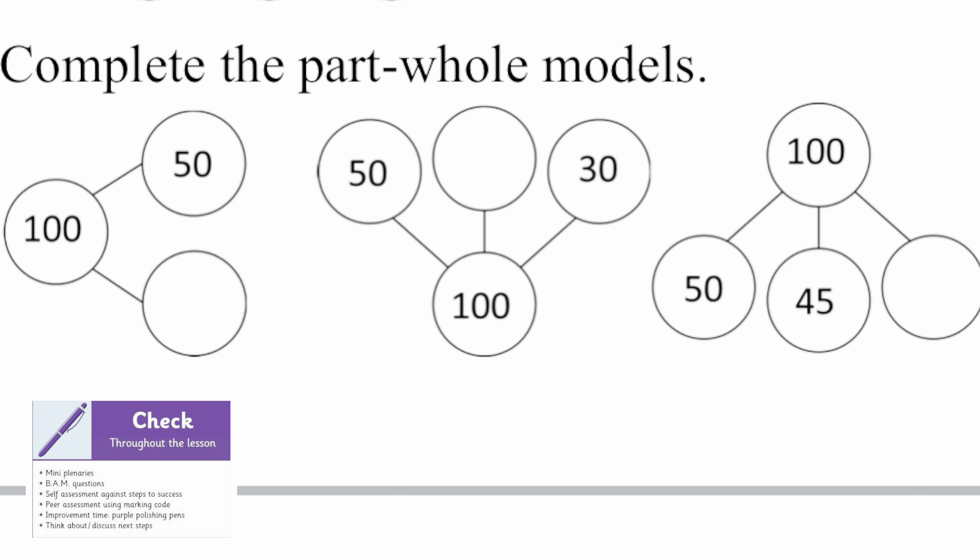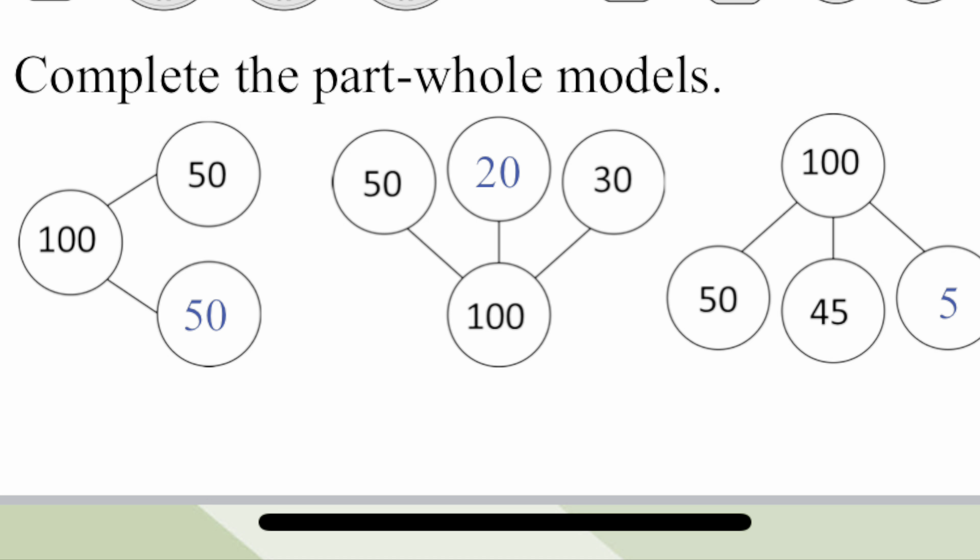This is our checkpoint. Number bonds to 100 are going to help us today. Can you have a go at completing the part-whole models? Pause the video. How did you get on? We can see 50 add 50 makes 100. 50 add 20 add 30 makes 100. And 50 add 45 add 5 makes 100 too.